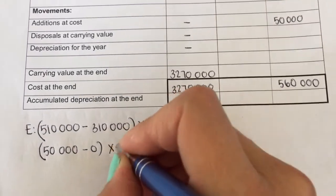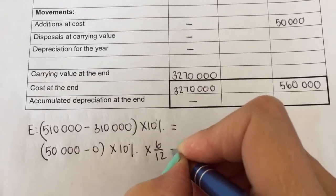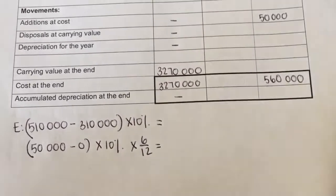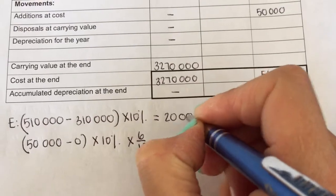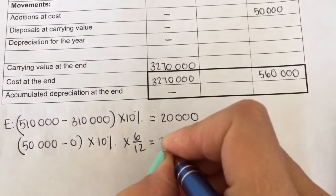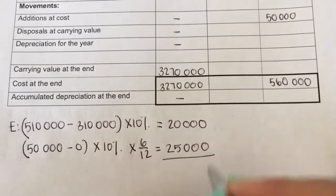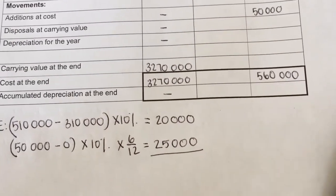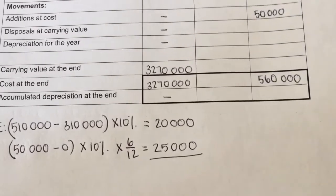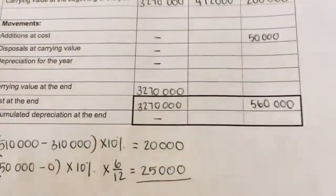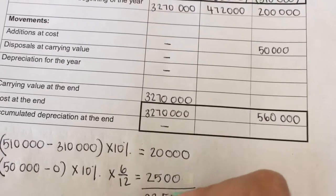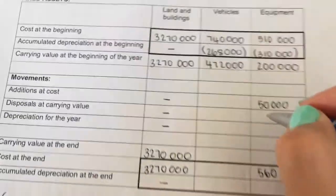I'm just subtracting a zero to show you that we are busy with diminishing balance method, but because it's brand new there's no depreciation at all. So therefore zero. This answer is 20,000, and then 50,000 times 10 times 6 over 12 gives me 25,000. Sorry, I made a mistake. I see it now on my calculator. 100 times 6 over 12 gives me 2,500. So then I get 22,500 rand for equipment and I'm going to fill that in over there.